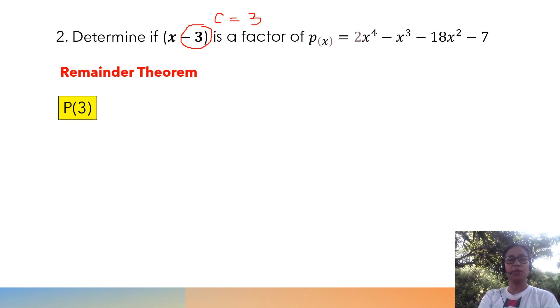With that, we are going to obtain this: 2(3⁴) - 3³ - 18(3²) - 7. To evaluate this, we can either use our calculator. Now, let me show you the value of each.